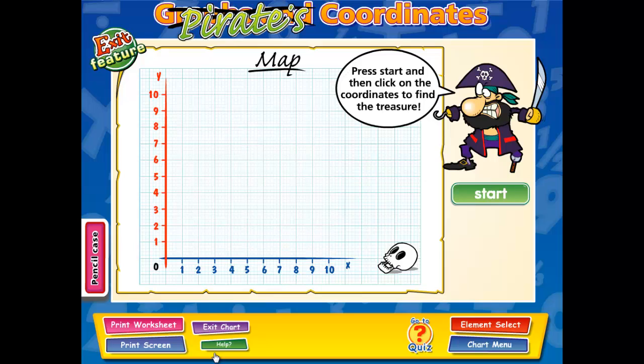The fun feature in this interactive whiteboard chart acts as a graphing exercise where the students have to graph the coordinates on a pirate's map to find the treasure. The pirate will give a series of coordinates and the student will have to graph them accordingly.